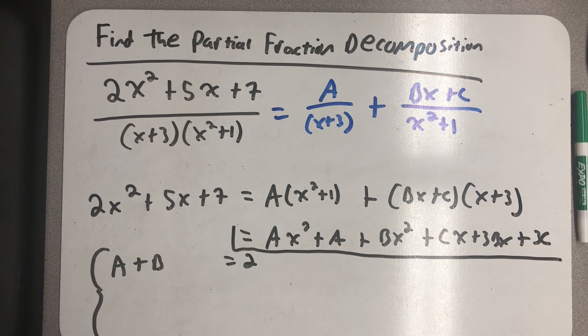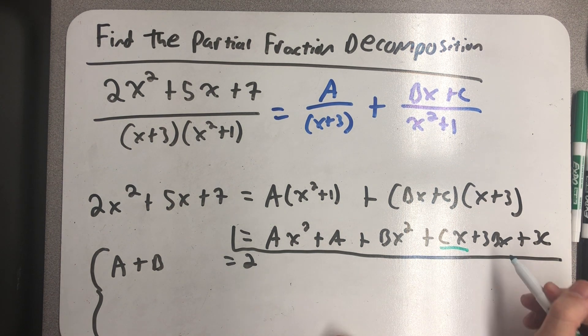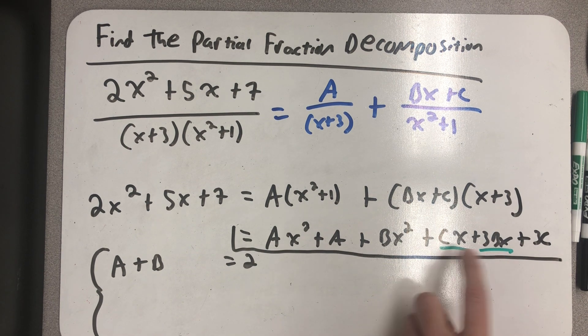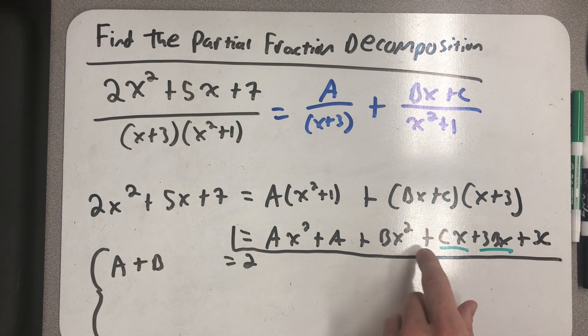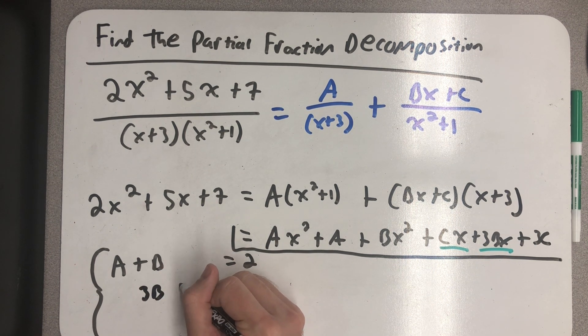Looking at the terms that have just x in them, cx plus 3bx would have to equal 5, so c plus 3b must be 5.